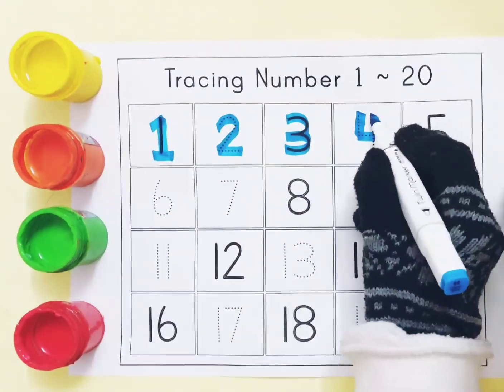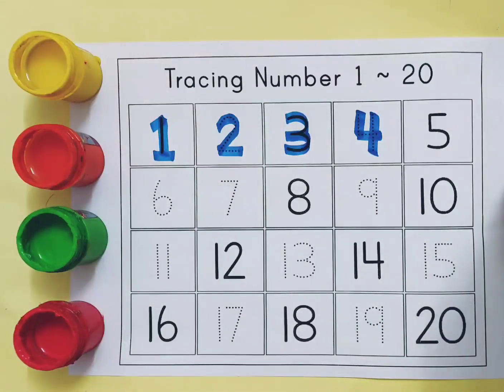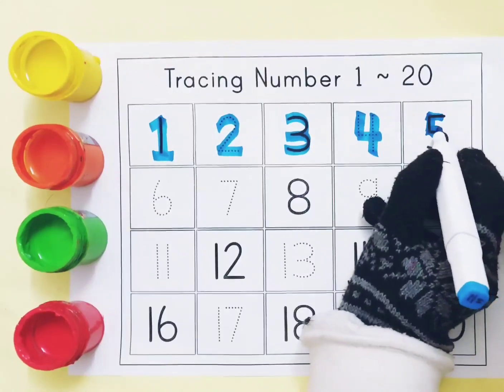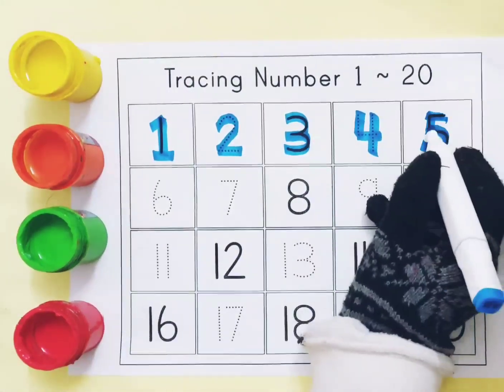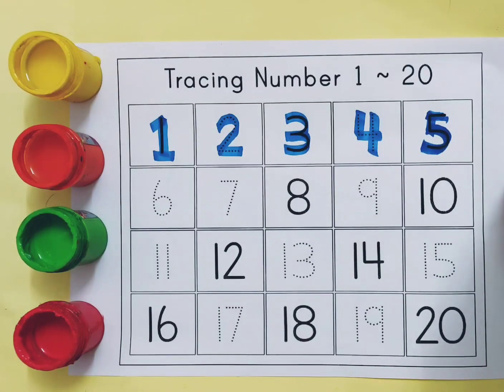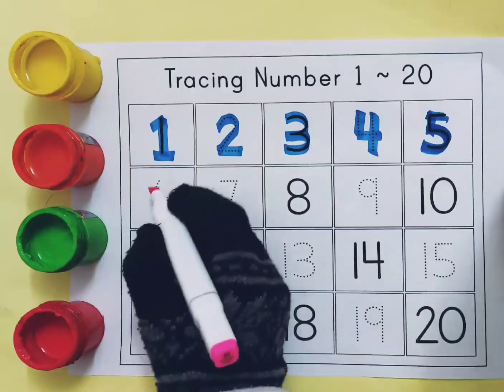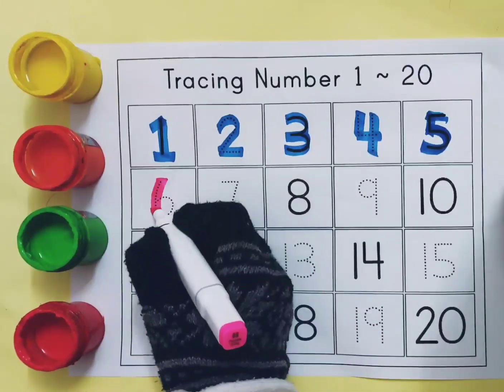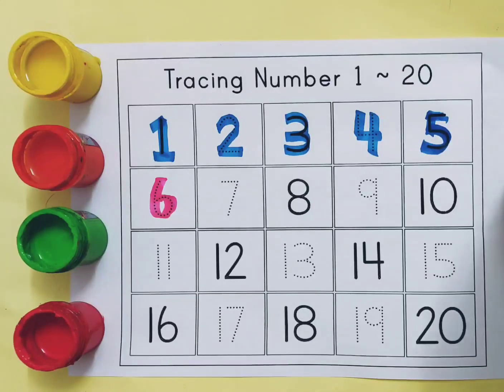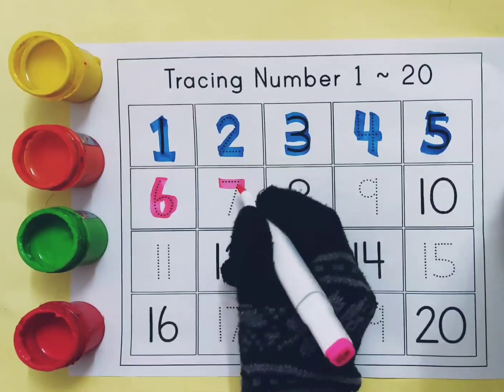This is 4, F-O-U-R, 4. This is 5, F-I-V-E, 5. This is 6. This is 7, S-E-V-E-N, 7.